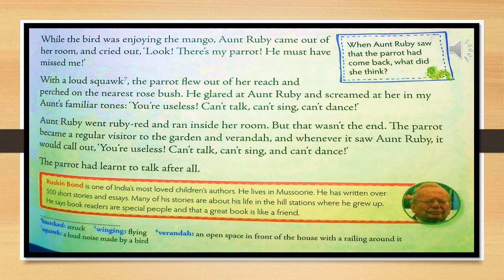He glared at Aunt Ruby and screamed at her in Aunt Ruby's familiar tones: 'You are useless, can't talk, can't sing, can't dance.' There is a question in the box: What did Aunt Ruby used to tell him? She always said, 'You are useless, can't talk, can't sing, can't dance.' Parrots imitate humans — she was always saying that to him, and he learned it from Aunt Ruby and said it as soon as he saw her.